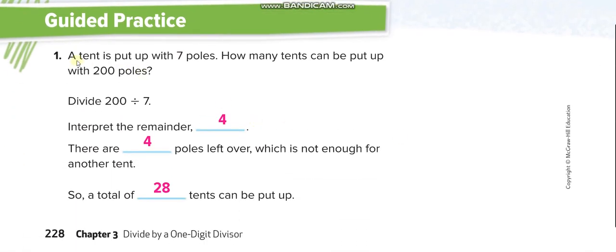Next example: A tent is put up with 7 poles. How many tents can be put up with 200 poles? So 200 divided by 7, we can put 28 tents. And how many poles we have? Remaining 4. But we need 7 poles to put another tent. So we can't put another one. So these remaining 4 are useless.